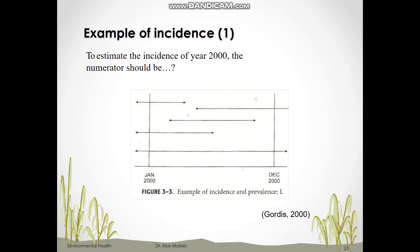In this figure, each line represents one patient and the time they became sick and recovered. The study period runs from January 2000 to December 2000. Patient one started before 2000, so it is not a new case and should not be included in the incidence numerator. Patient two and patient three started during 2000, so they are new cases. Patients four and five are not new cases during 2000. Therefore, the numerator for incidence is 2.